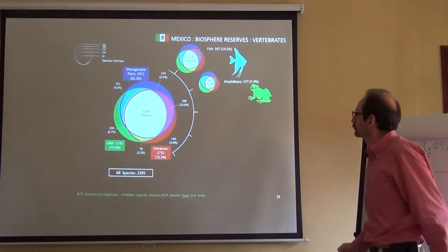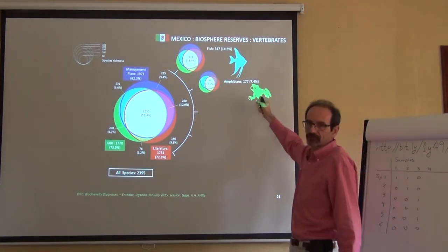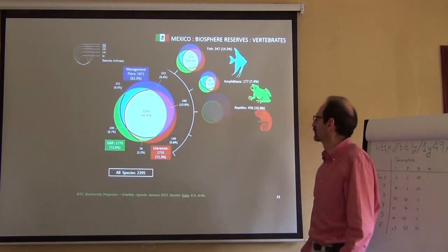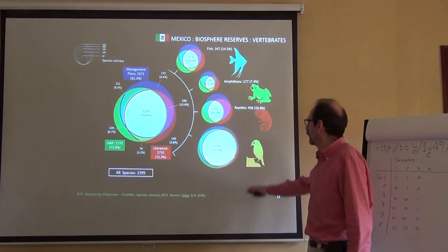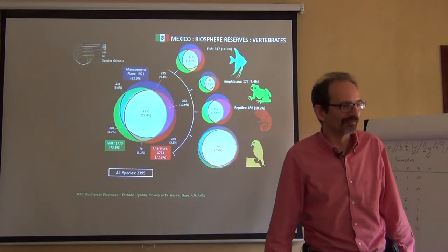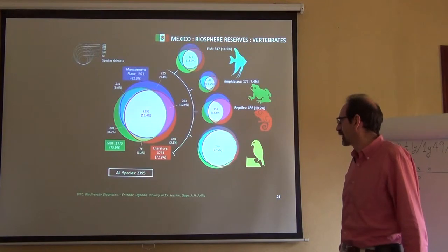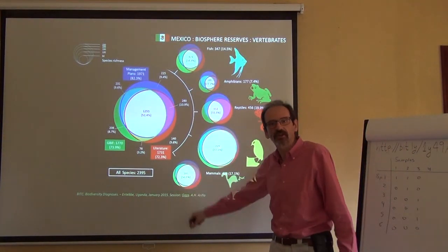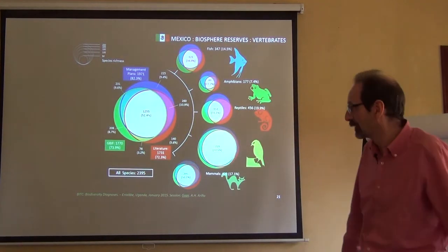If we split everything by taxon group, we see that fish are probably the least known group of species. This is even worse for amphibians and reptiles — only one-third common knowledge. Not surprisingly, birds are very well known, with 72% commonality. Mammals are only 50%.